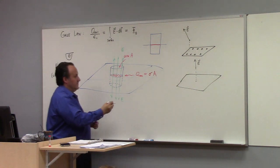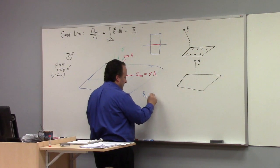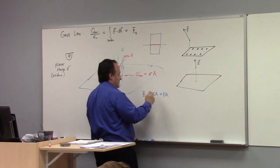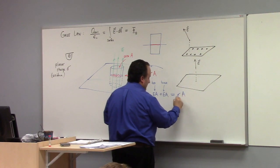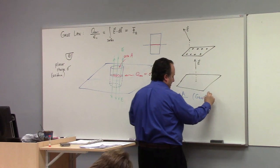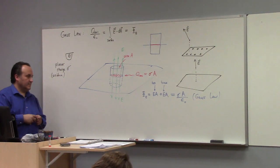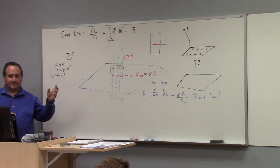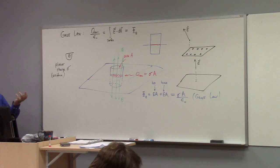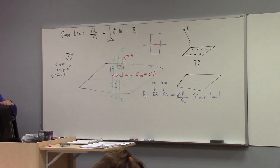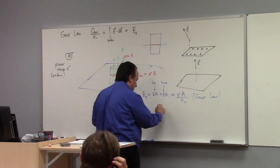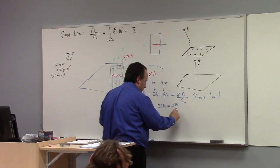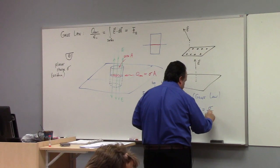The field lines start at the charge — that's where they're coming from. So the flux of the electric field equals E times A plus E times A — that's the top and that's the base — and that equals sigma times A divided by epsilon naught. That's Gauss's law. So you get 2EA equals sigma A over epsilon naught. Divide by A, and the electric field is sigma divided by 2 epsilon naught.